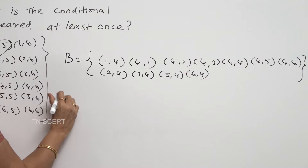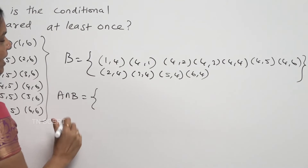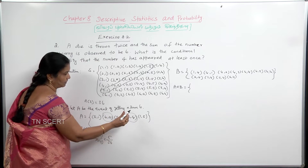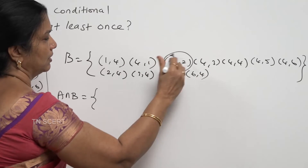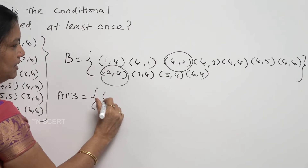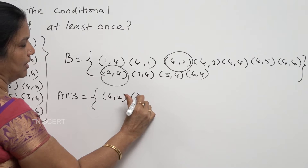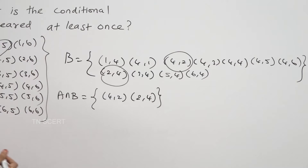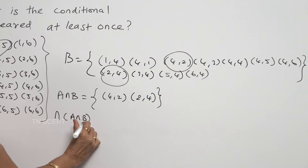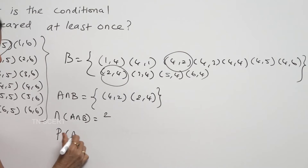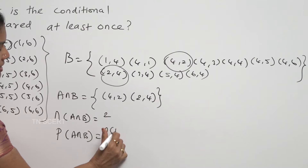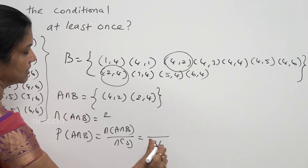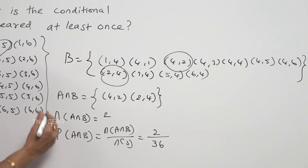Now we find A intersection B — the common elements between A and B. Looking at the common elements: (4,2) and (2,4) are common. So n of A intersection B equals 2. Therefore P of A intersection B equals 2 by 36.